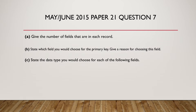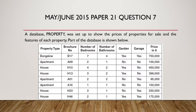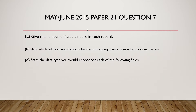First question: give the number of fields that are in each record. The number of fields is the number of columns — counting them: 1, 2, 3, 4, 5, 6, and 7. So the number of fields is 7 fields.